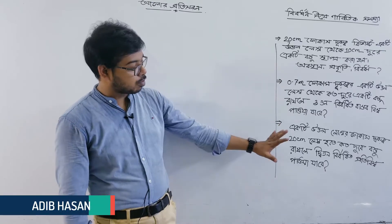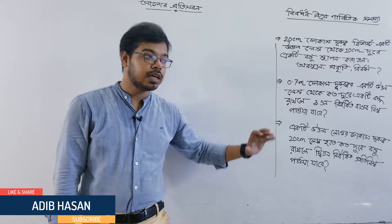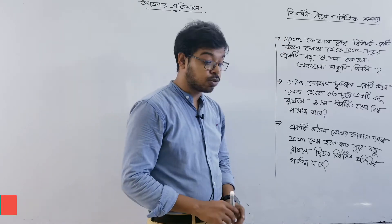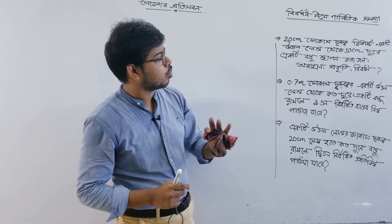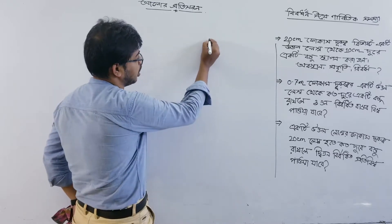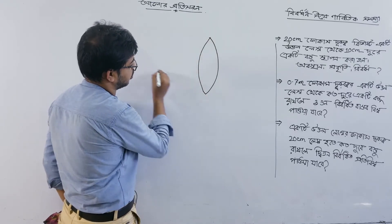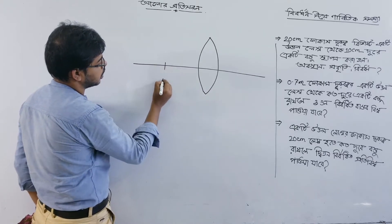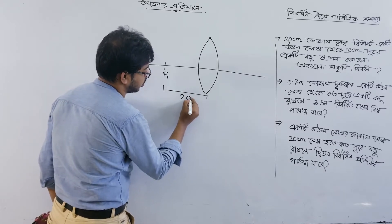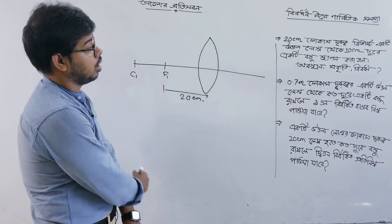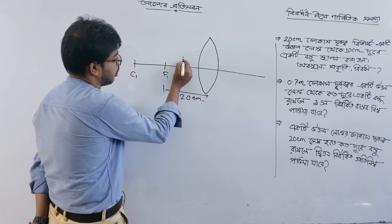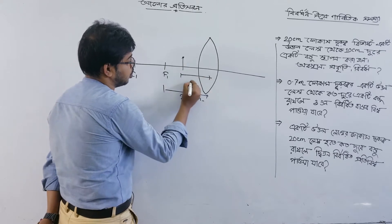Today's math involves magnification. The problem includes three parts. It is given: a convex lens with focal length 20 cm. An object is placed 10 cm in front of this convex lens. That means if f1 is the focal point and c1 is the center, f = 20 cm, and the object is placed 10 cm from the lens — so u = 10 cm, right?